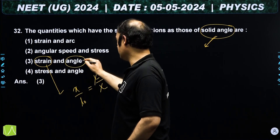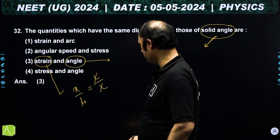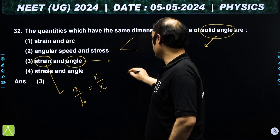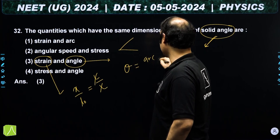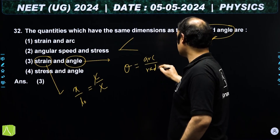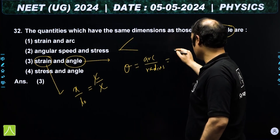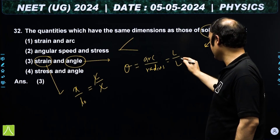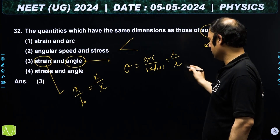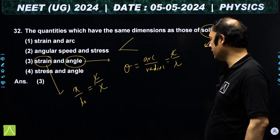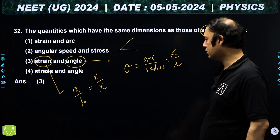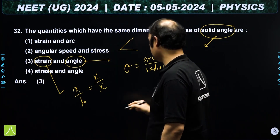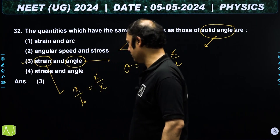Angle is also dimensionless. Plane angle = arc/radius, arc has dimension L and radius has dimension L, they cancel — plane angle is dimensionless. So strain and plane angle both have the same dimension as solid angle. The third option is correct.